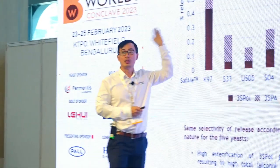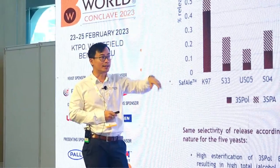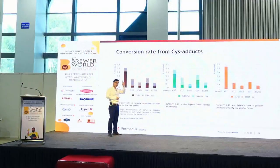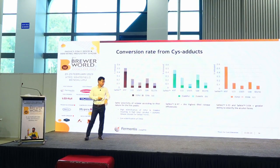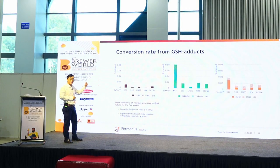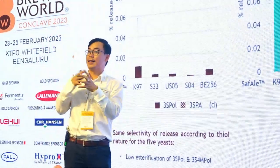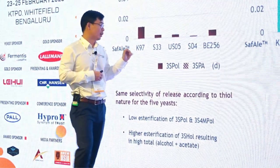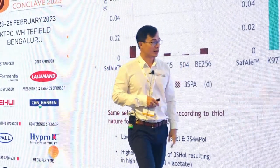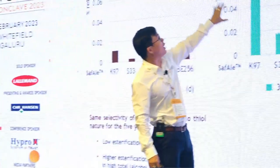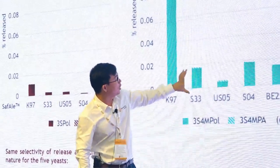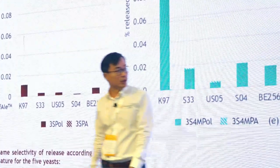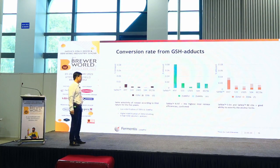To summarize: the higher the column, the more thiols released in free form. The striped portion is the S-acetylated form — which requires two enzymatic steps to produce. For the second precursor — the glutathione-bound one, which needs three enzymes — we see the same phenomenon. K97 still performs very strongly, BE-256 is also a bit stronger here. S33 shows some S-acetylation as well. We have similar results across both precursor types — that is the main message.